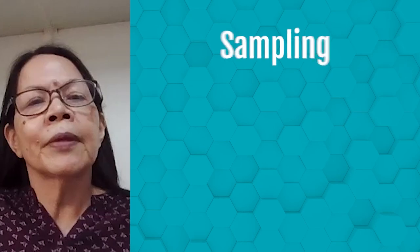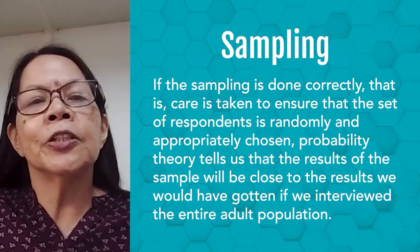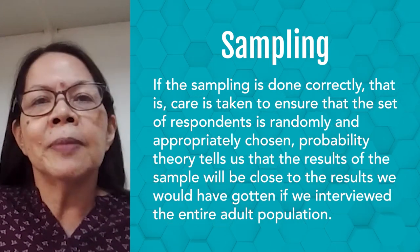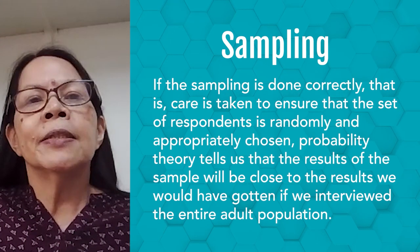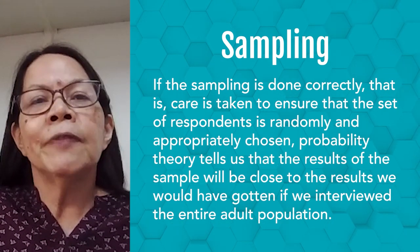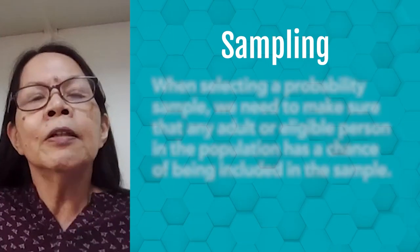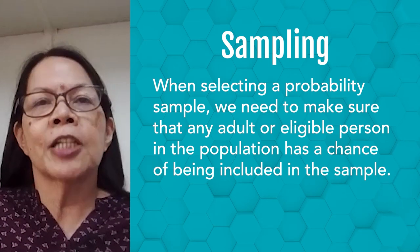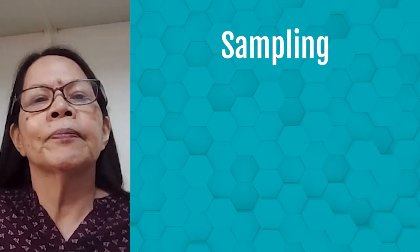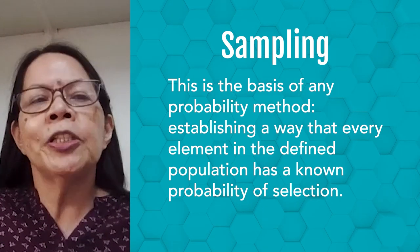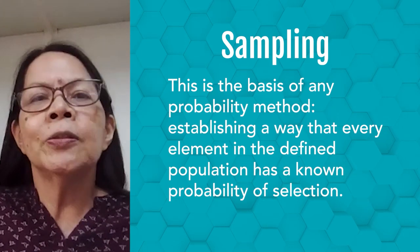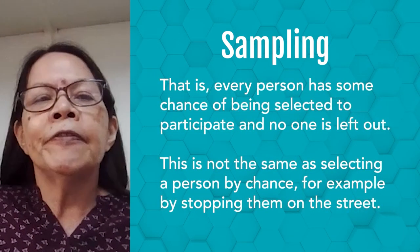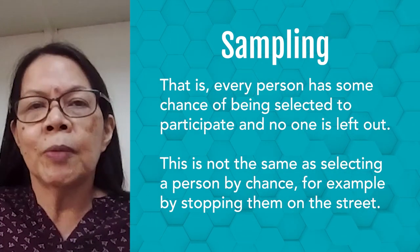Sampling is similar in that we need to take certain steps to ensure that the sample is representative of the population. If the sampling is done correctly — that is, care is taken to ensure that the set of respondents is randomly and appropriately chosen — probability theory tells us that the result from the sample will be close to the results we would have gotten had we interviewed the entire population. When selecting a probability sample, we need to make sure that any adult or eligible person in the population has a chance of being included in the sample. This is the basis of any probability method: every element in the defined population has a known chance of selection — every person has some chance of being selected and no one is left out.